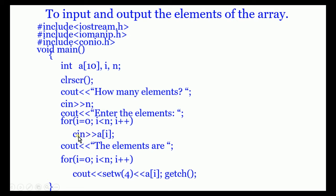We are not sending a[i] to cin, but taking a[i] from cin, which is why we write cin >> a[i]. Then cout << "the elements are". A second for loop: for i = 0, i < n, i++, cout << setw(4) << a[i]. setw(4) sets a width of 4 to display each number. At the end, getch() pauses after the output is displayed.